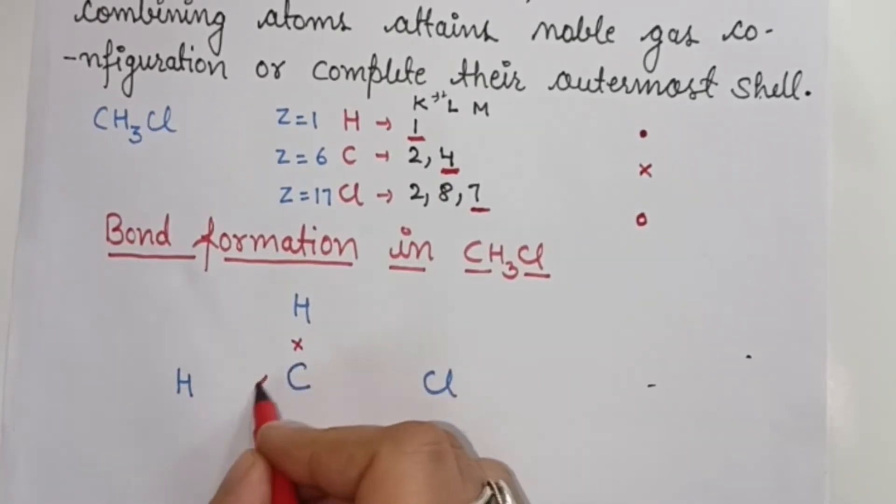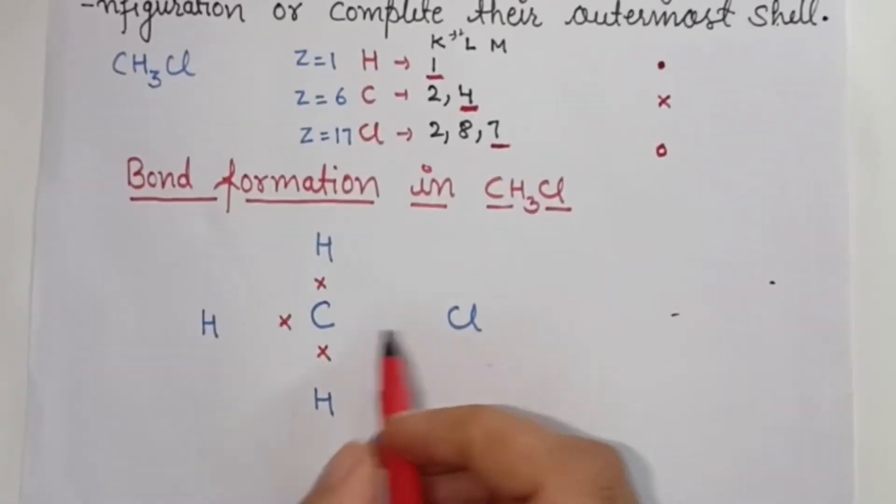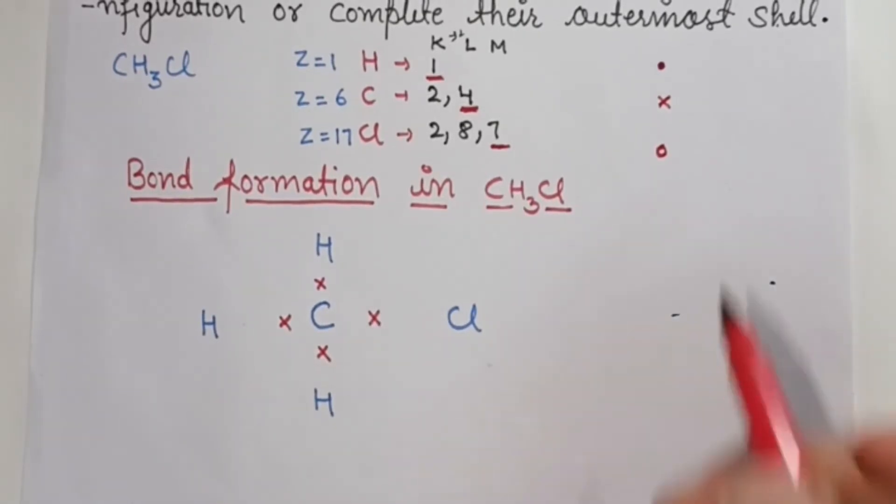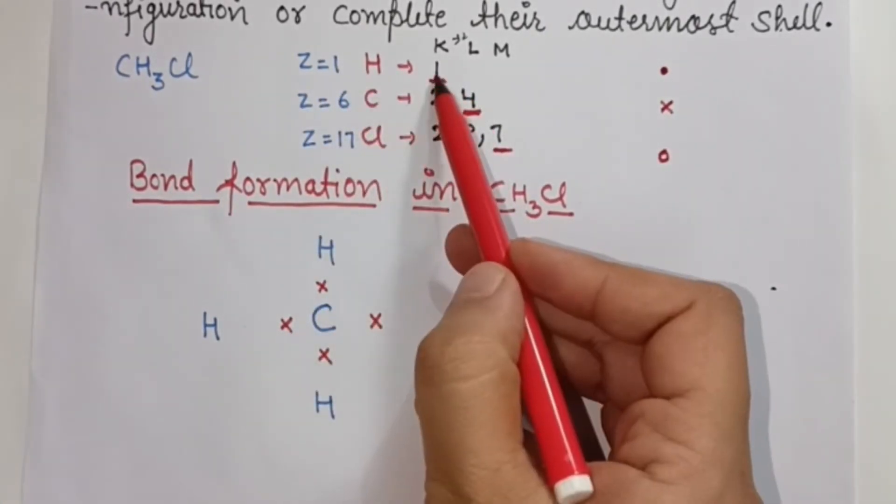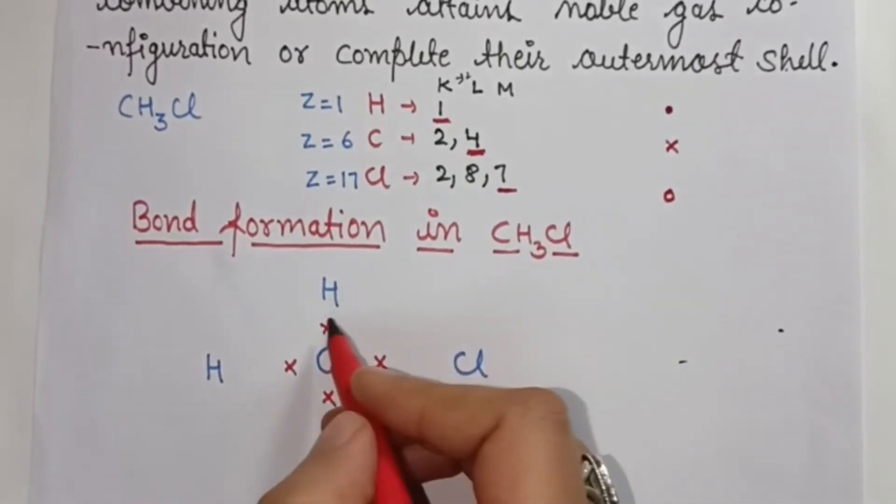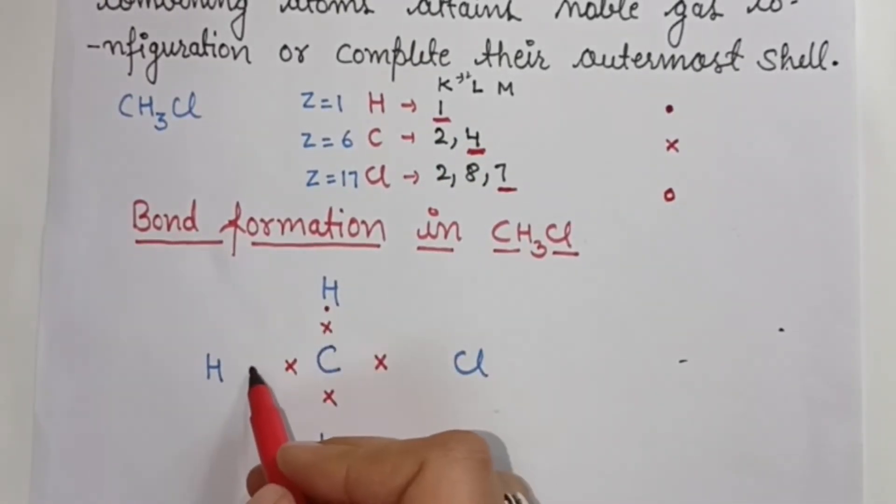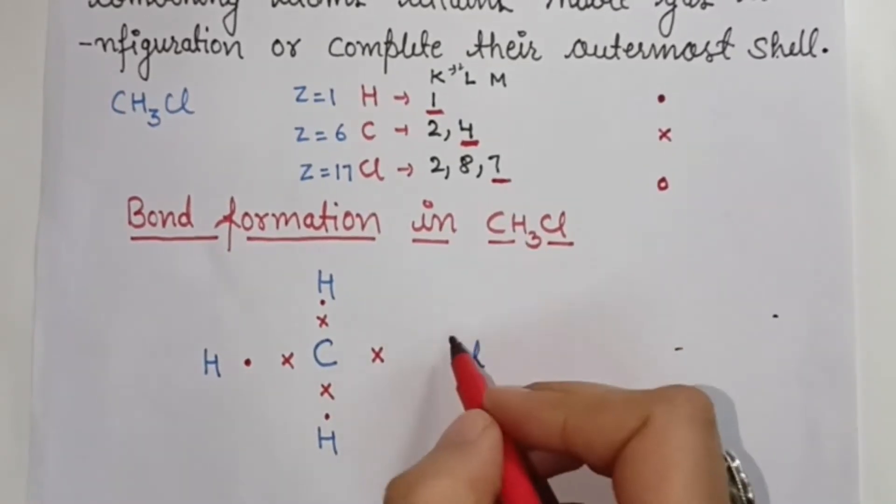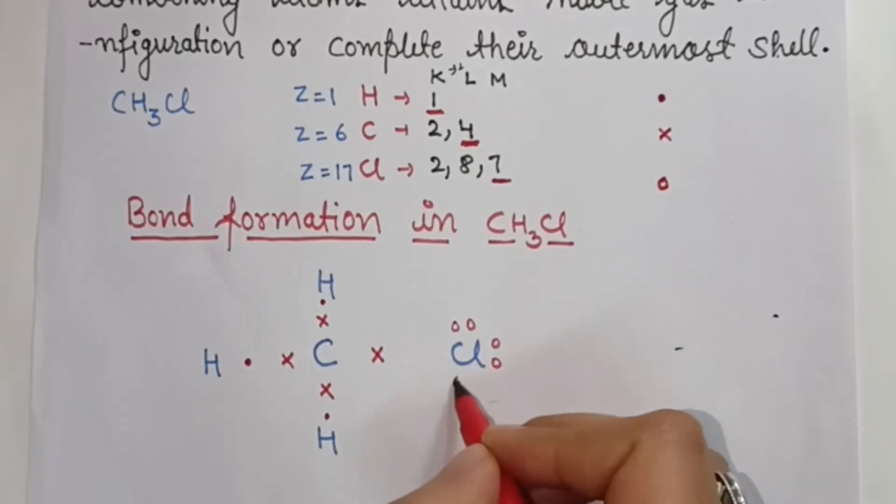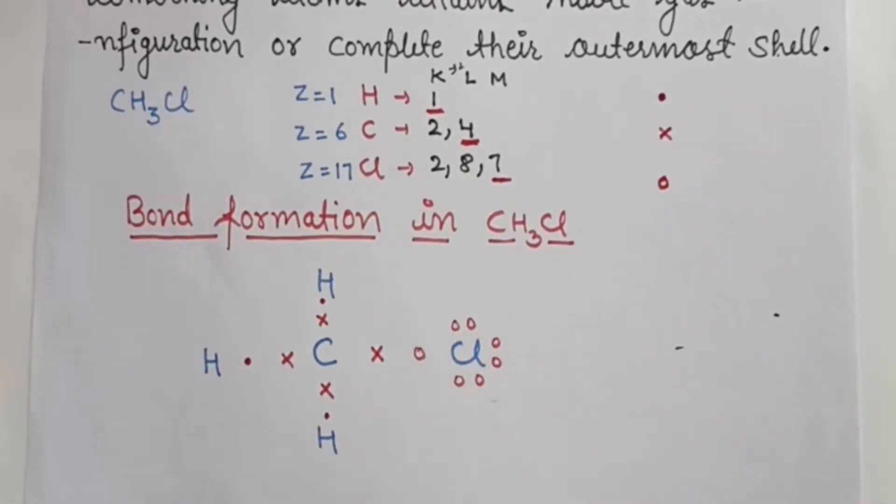Each hydrogen has only 1 valence electron, so we put 1 dot for each hydrogen atom at different positions around carbon. Now chlorine has 7 valence electrons represented by small circles: 1, 2, 3, 4, 5, 6, and 7.